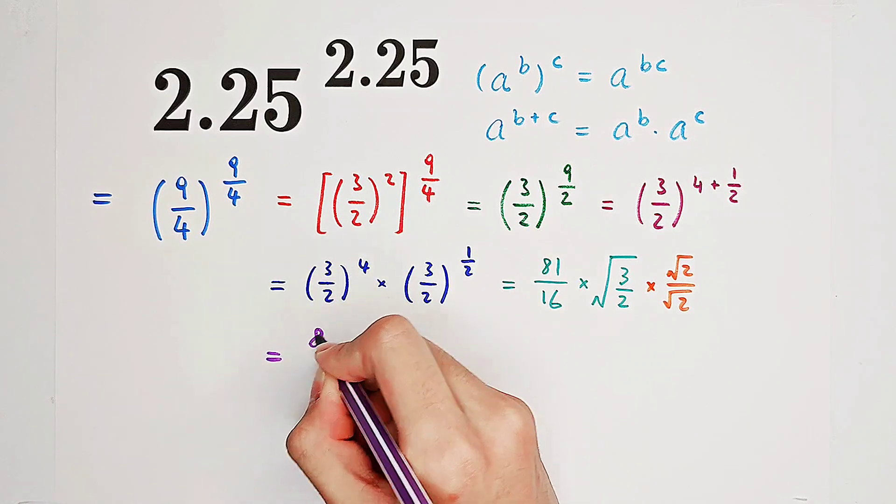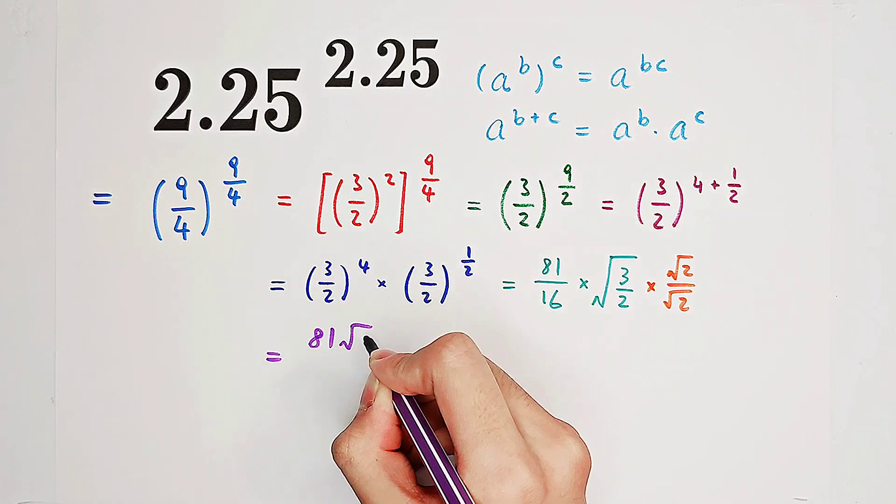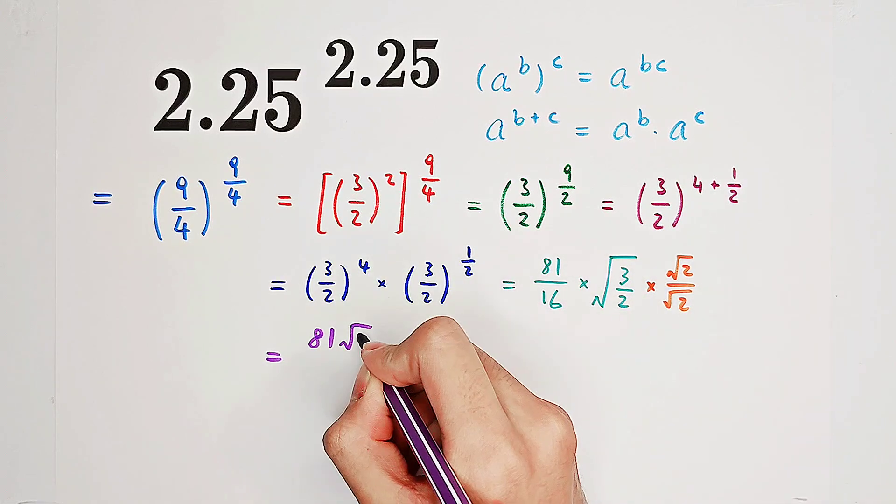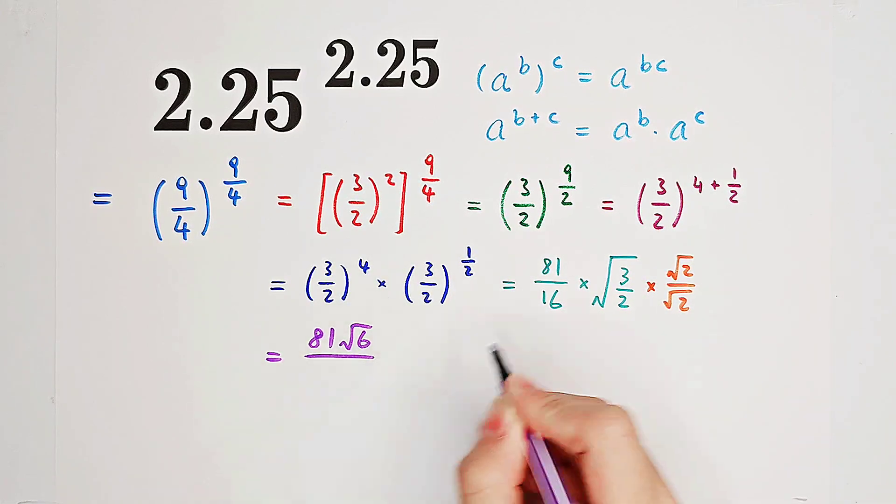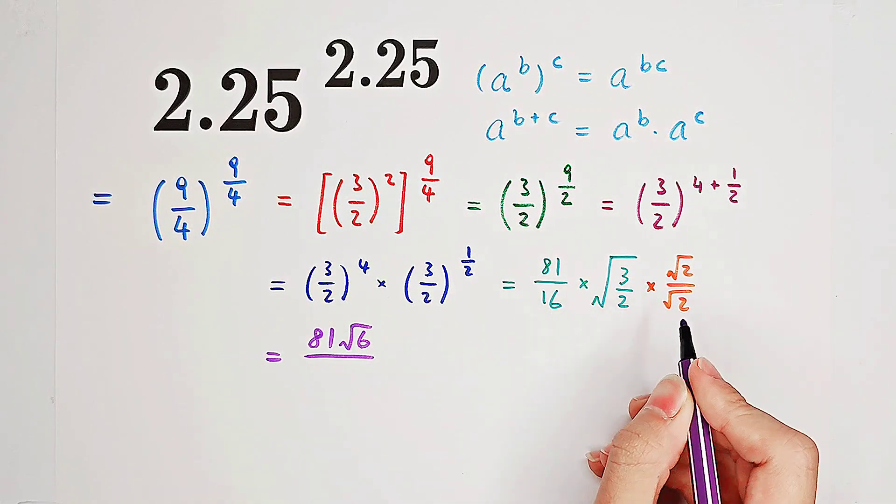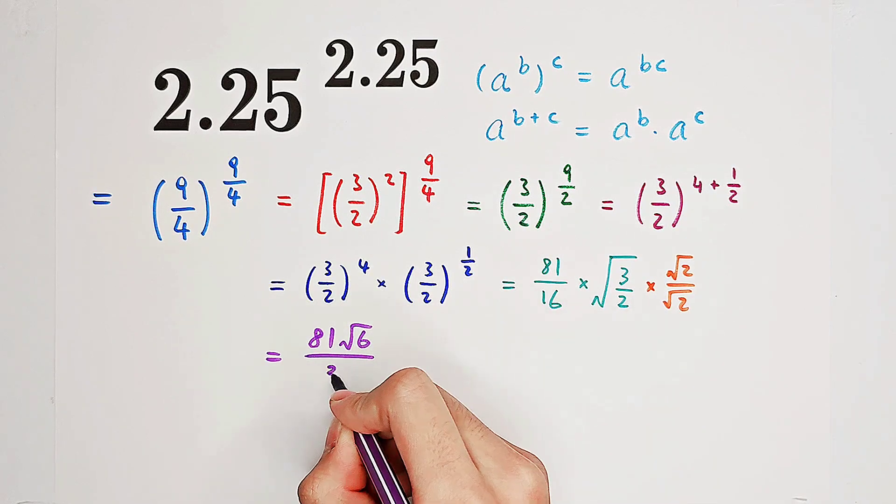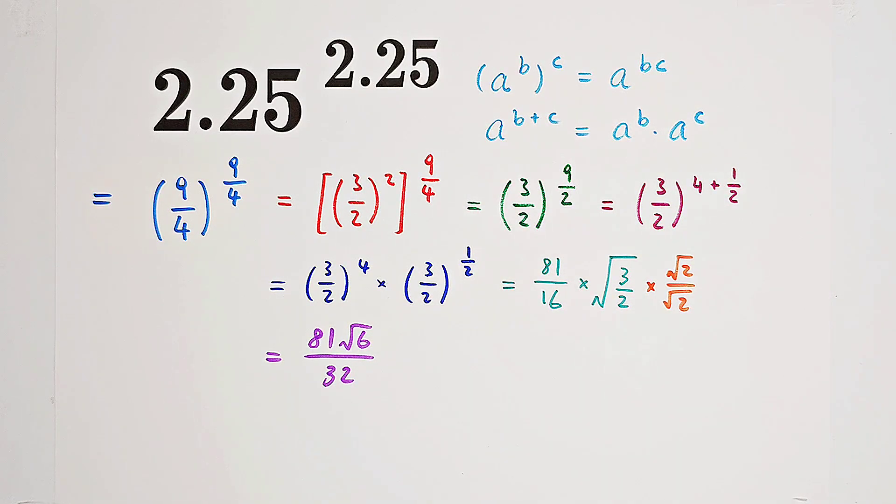It is 81 times square root of 3 times square root of 2 is square root of 6 over 16 times square root of 2 times square root of 2 is 16 times 2 is 32. And this is our final answer.